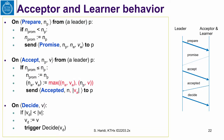Now we look at the acceptor and learner behavior. When an acceptor gets a prepare message, as usual, if N is higher than the promise, it updates the promise and sends back a promise to the new leader. For the accept message: if it gets a sequence with round number N from the leader, and N is higher than or equal to the promise — again to make sure the promise is updated — it updates its accepted sequence using the max operation we described, and then sends an accepted message with the length of the accepted sequence.